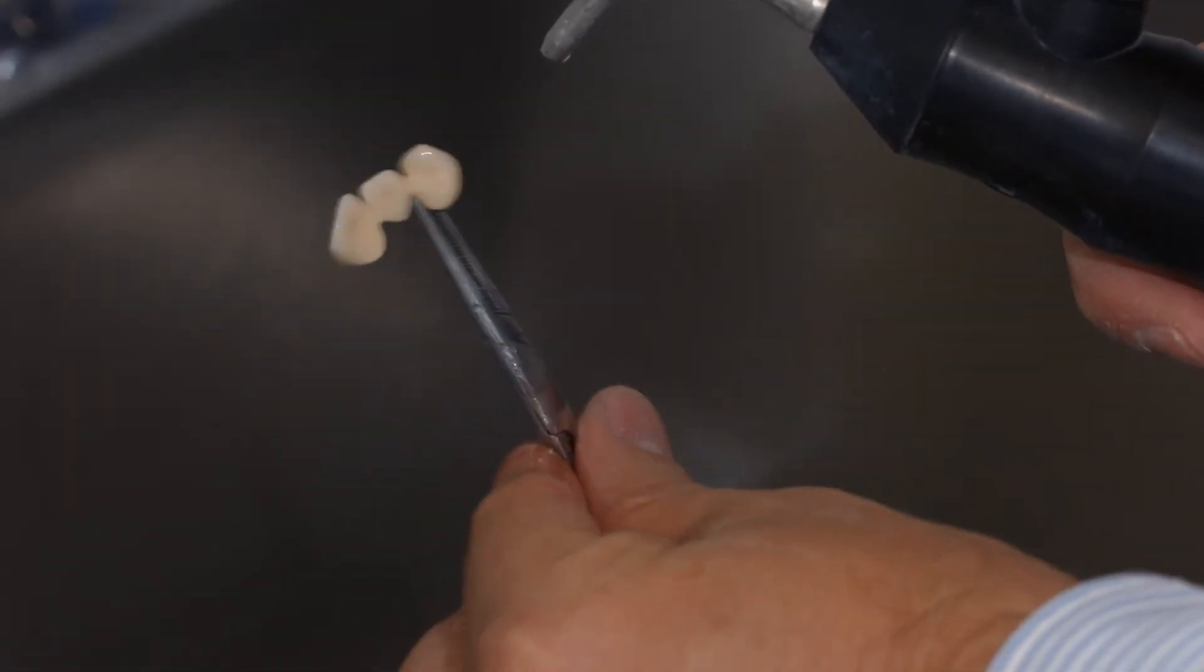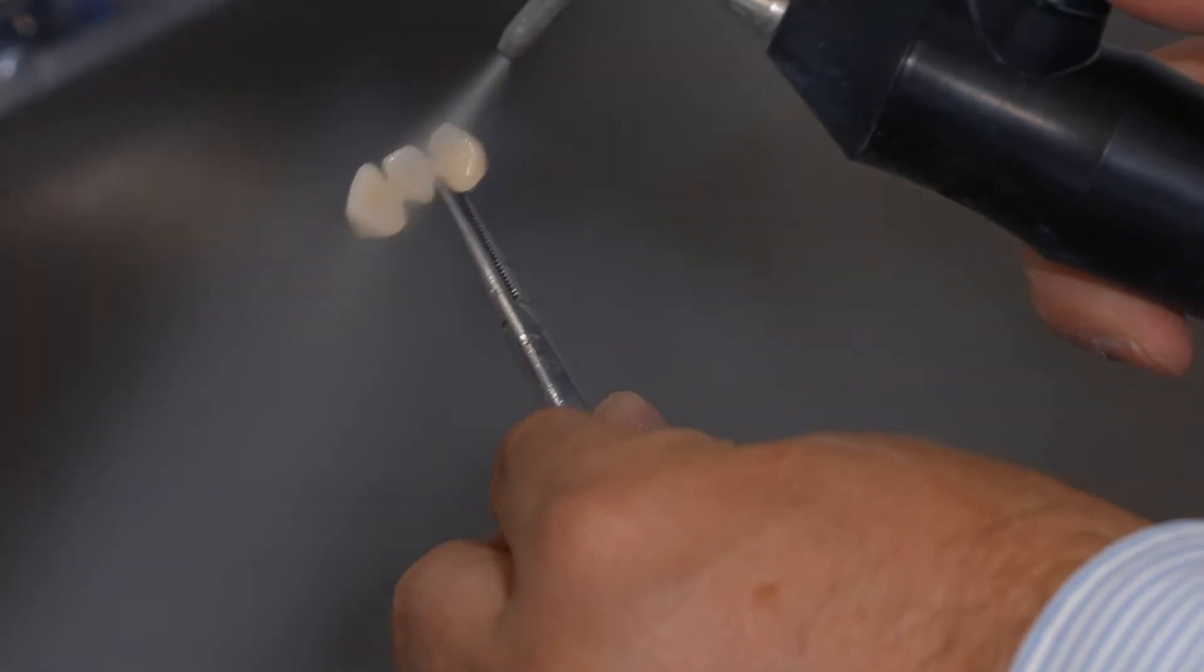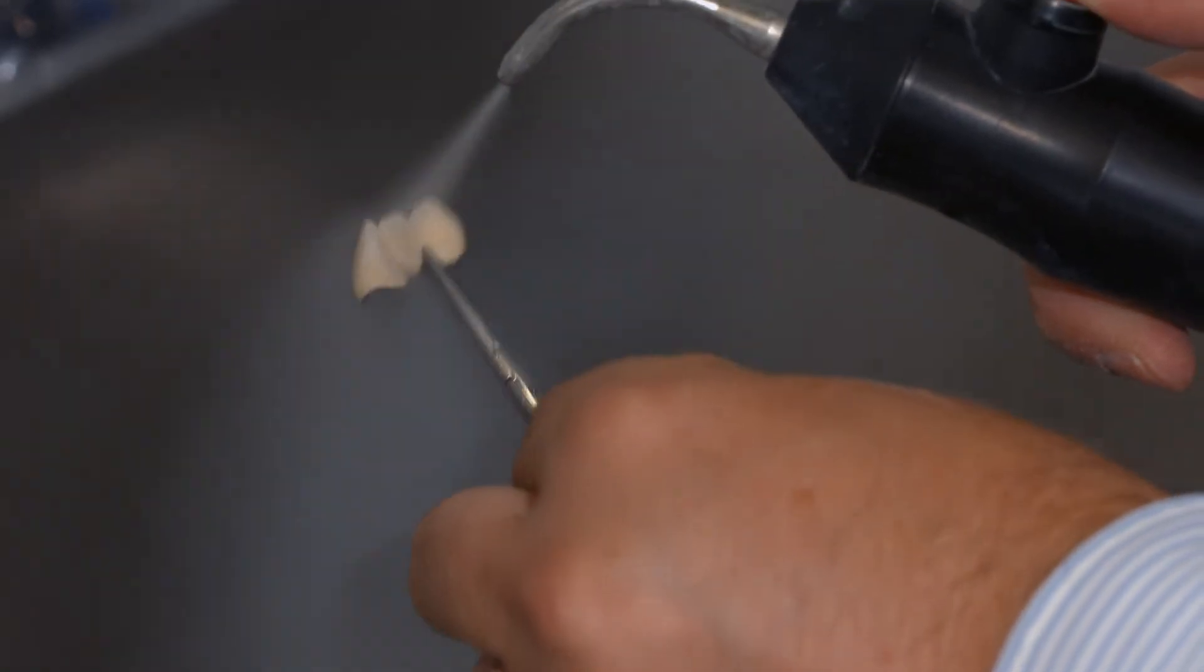Thoroughly clean the restoration with the steam jet and dry it with oil-free air before you start characterizing and staining its surface.